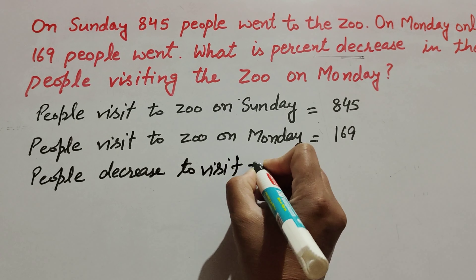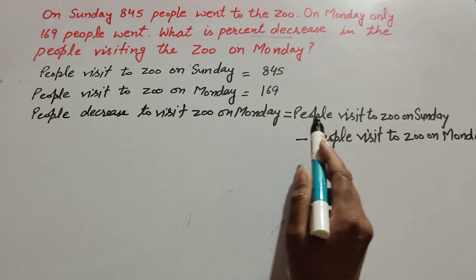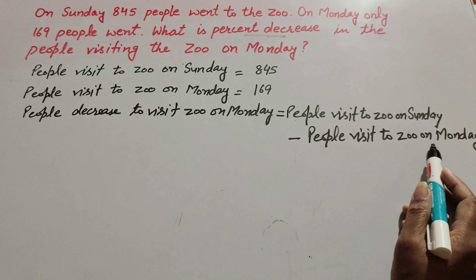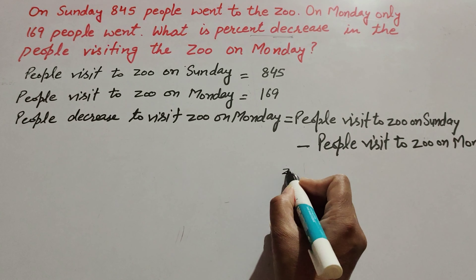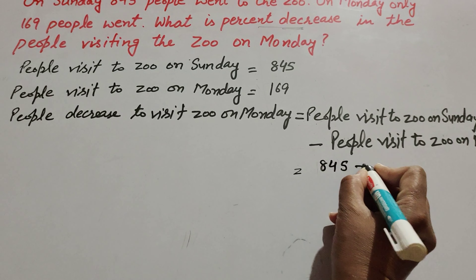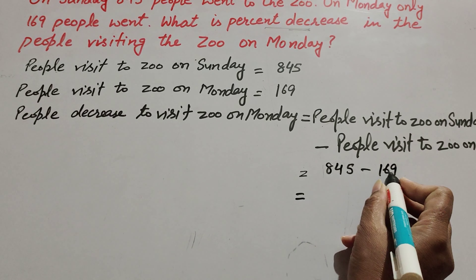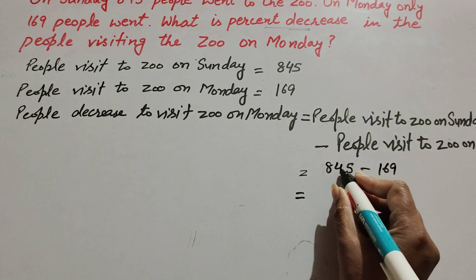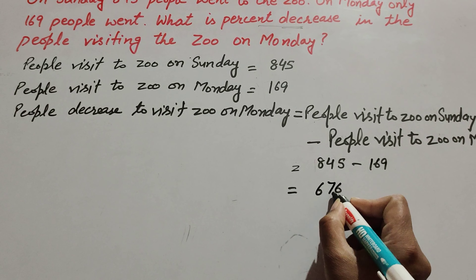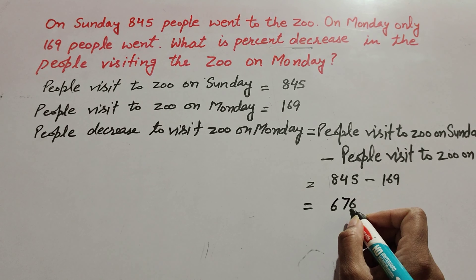People decrease — visits on Monday — is equal to people who visited on Sunday minus people who visited on Monday. So, 845 minus 169 is equal to 676. So, 676 people decreased visiting on Monday.